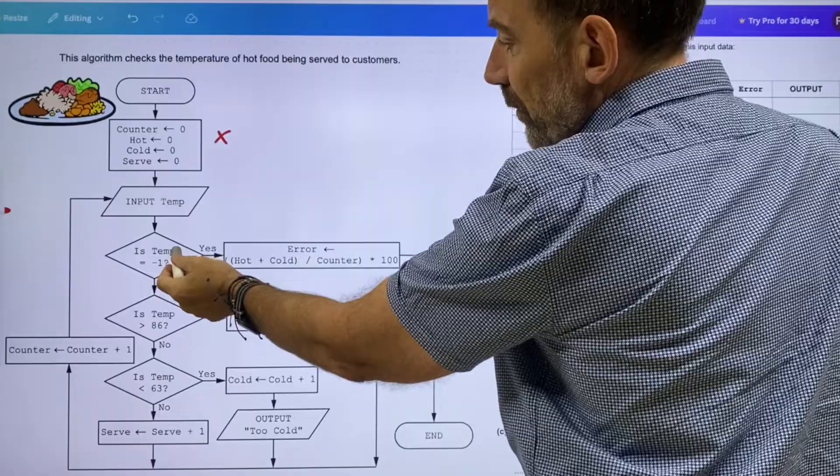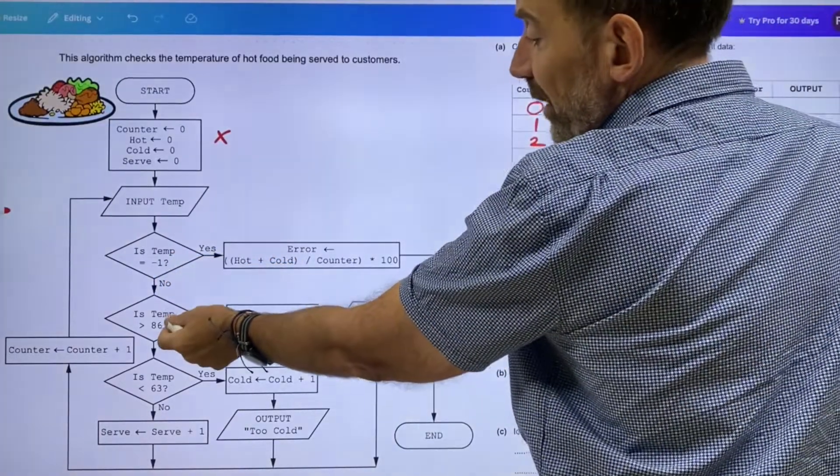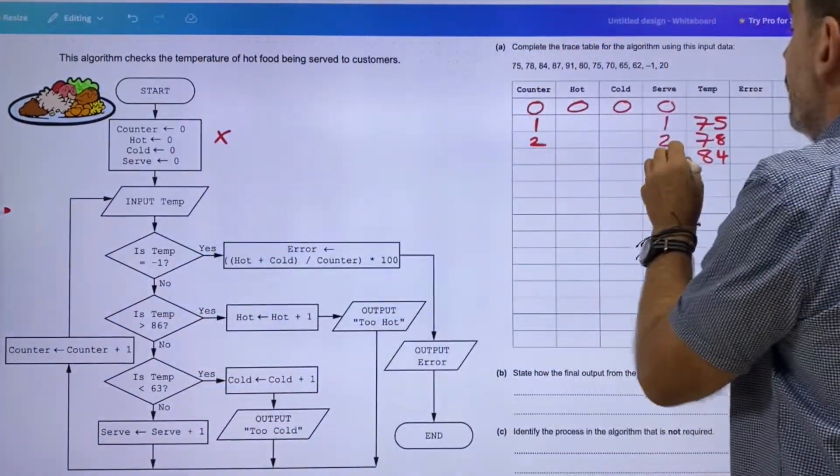I think we've got a pattern coming. Minus one? No. Greater than 86? No. Less than 63? No. Looks like we're going to serve that one, so two. What have we got now? 84.